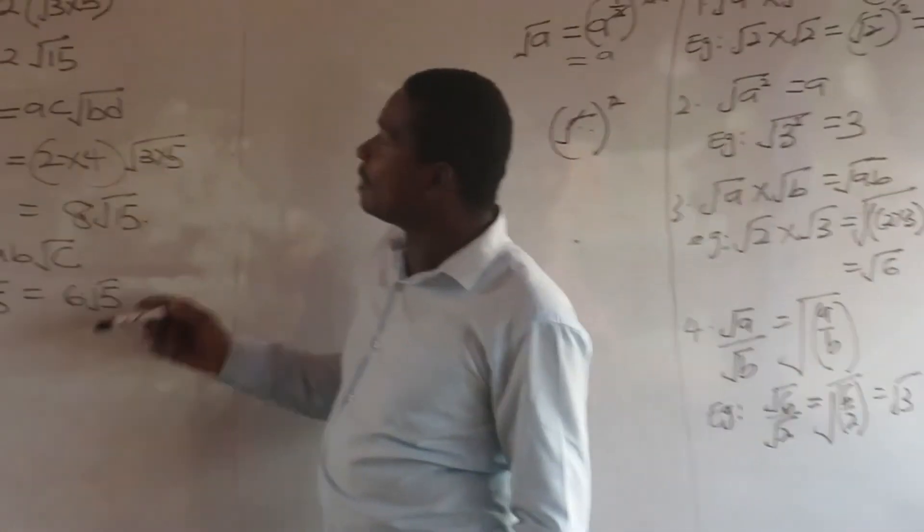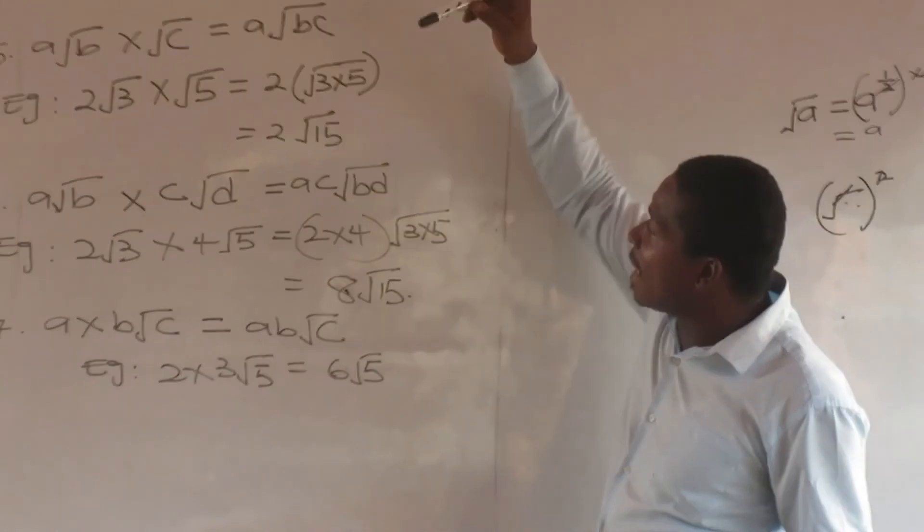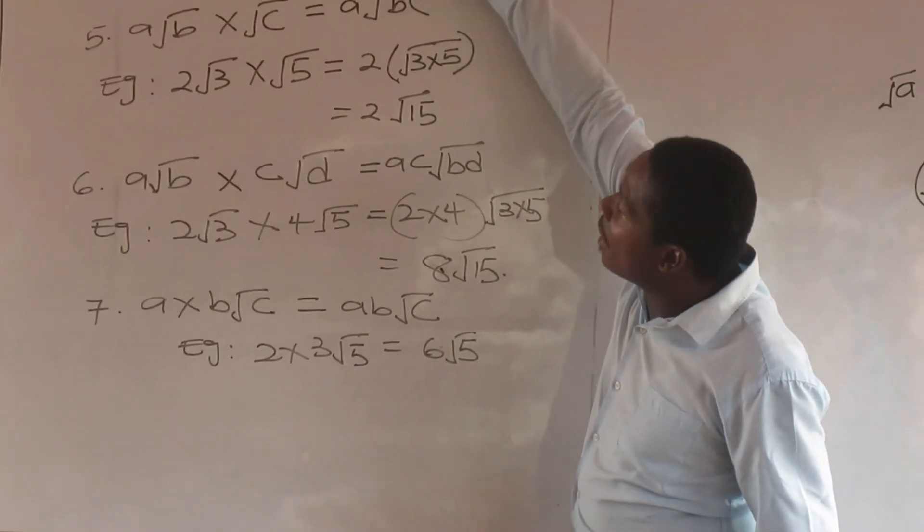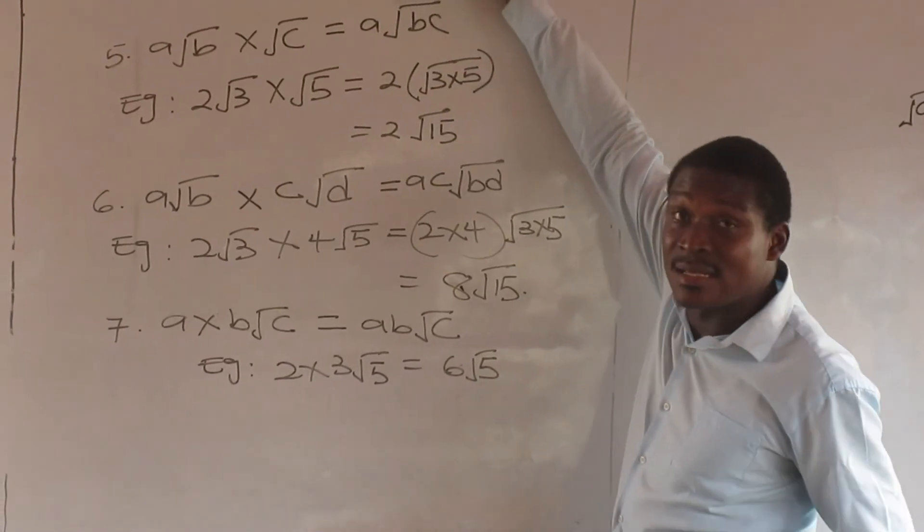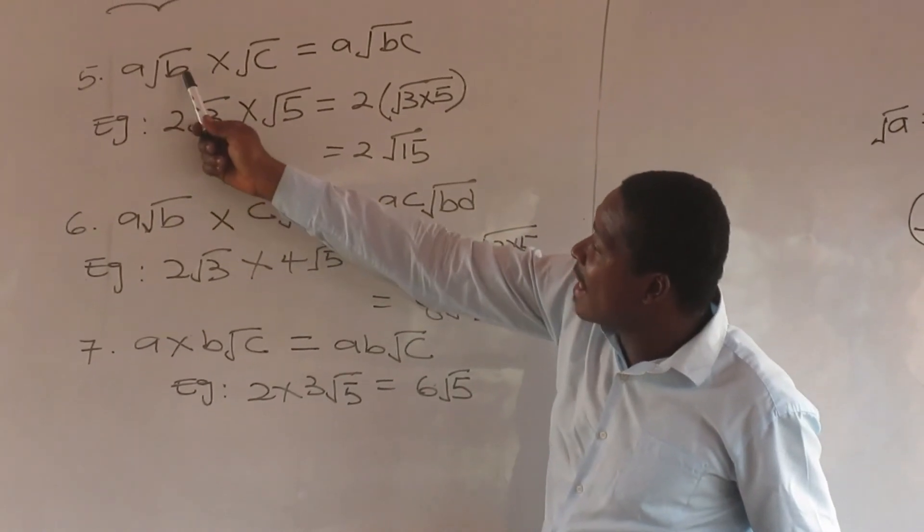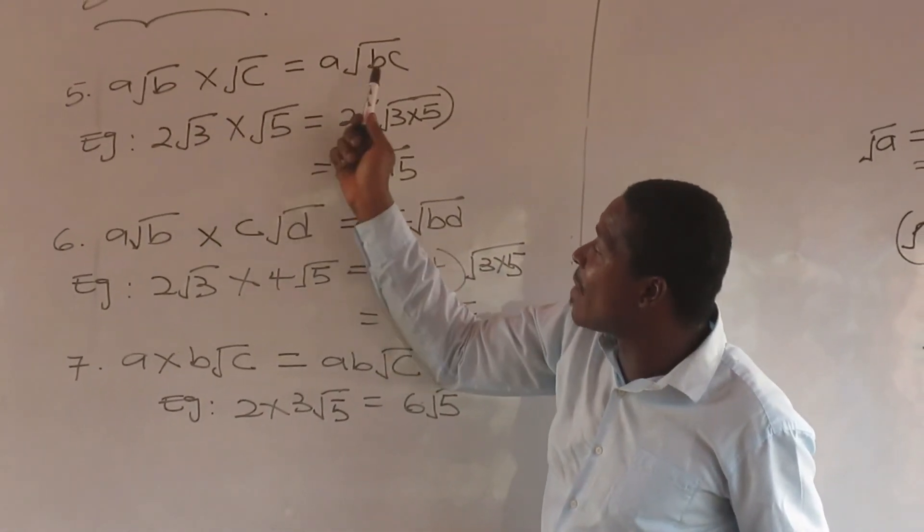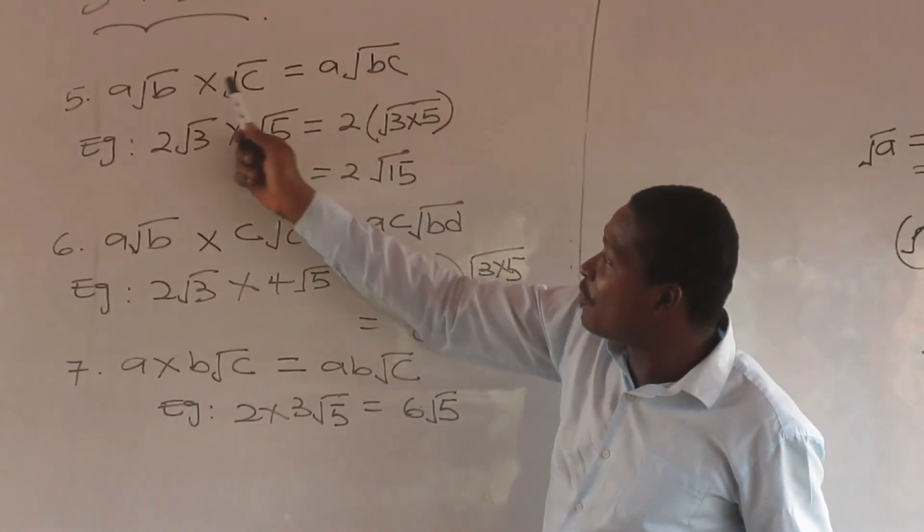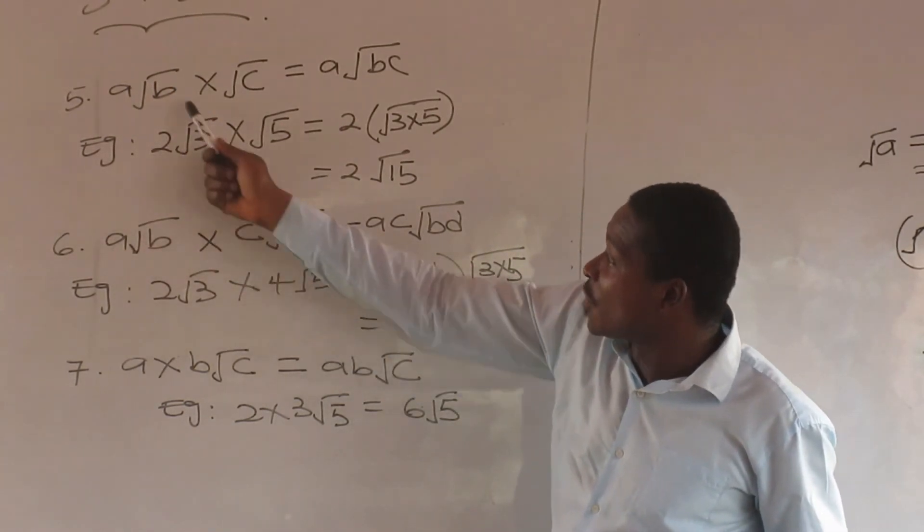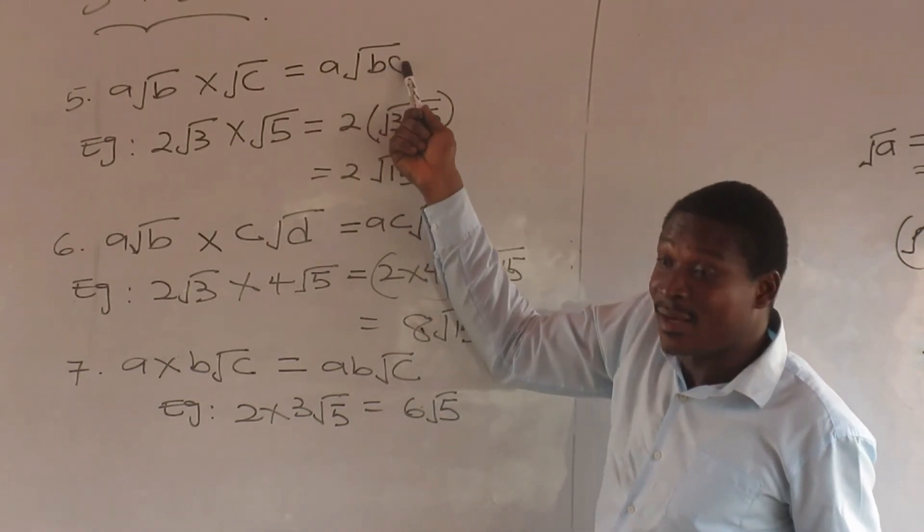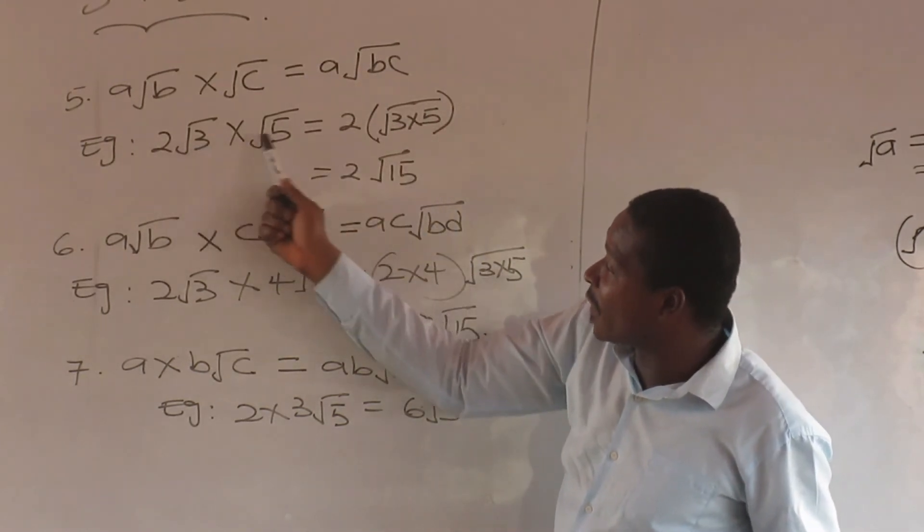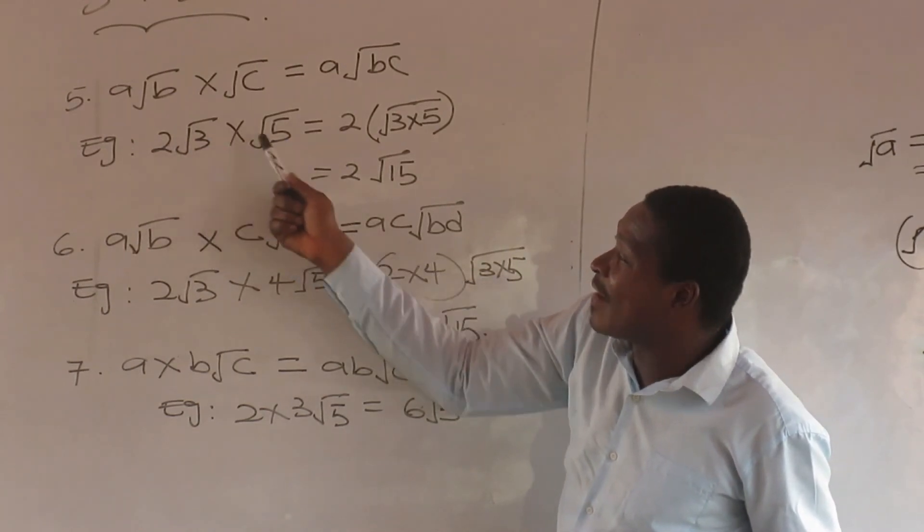Surd property 5: a root b times root c. In surds, if you are in a root, you remain in a root. If you lie outside a root, you will remain outside. So you see root b by root c, you are inside, the a is still out. It's a property. So 2 root 3 by 5, these two can never enter this root. No, your position is outside, you will always be there.